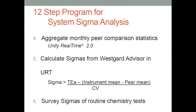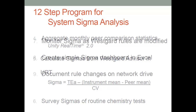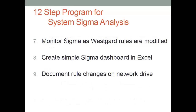We aggregated monthly peer comparison statistics. Going through the 12 steps, we needed a way to calculate sigma based on peer comparison. We got the monthly summary reports and Unity real-time reports automatically, and used WestGuard Advisor to take all that data and hone it down to a sigma statistic per control per test. I'll show you tables of what those numbers actually turned out to be.